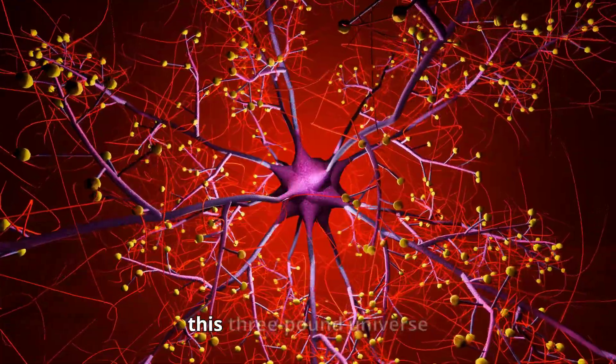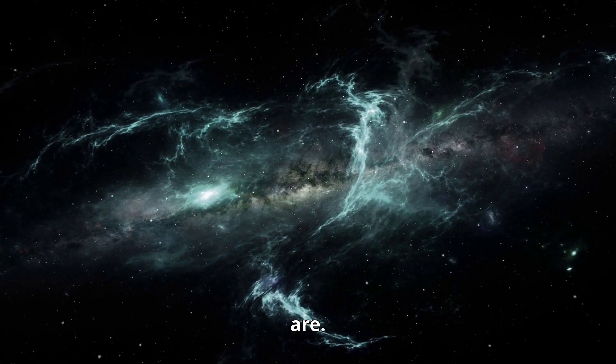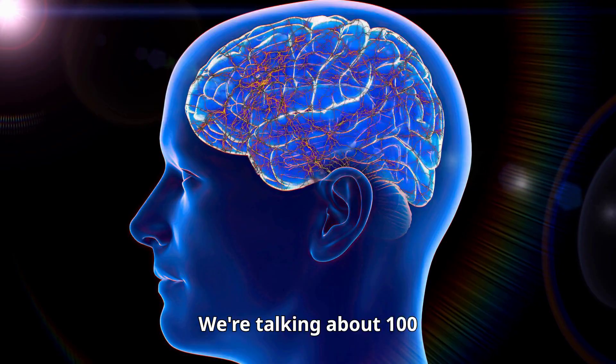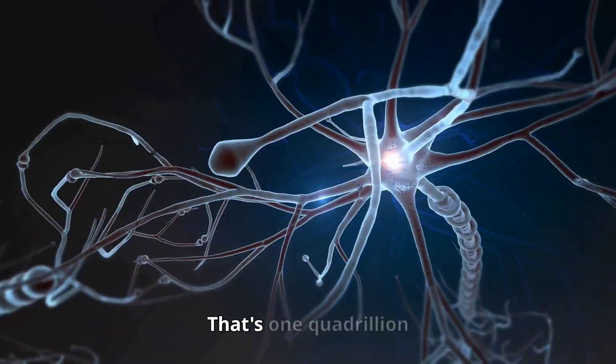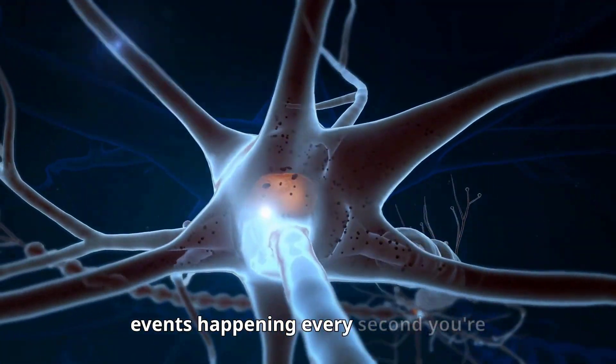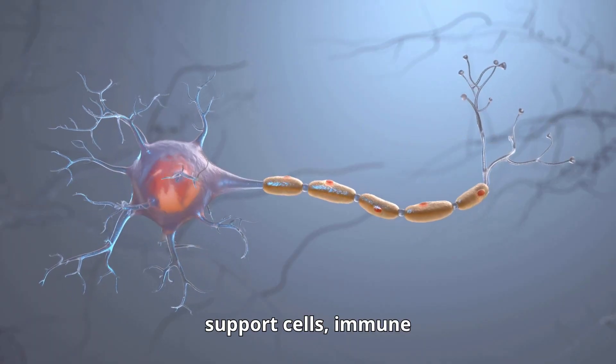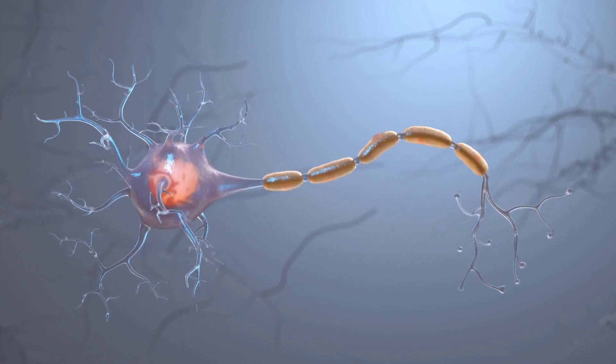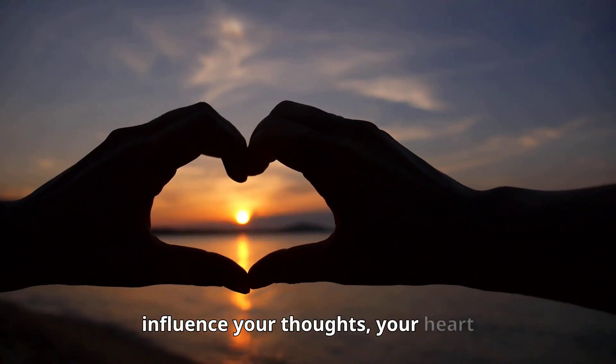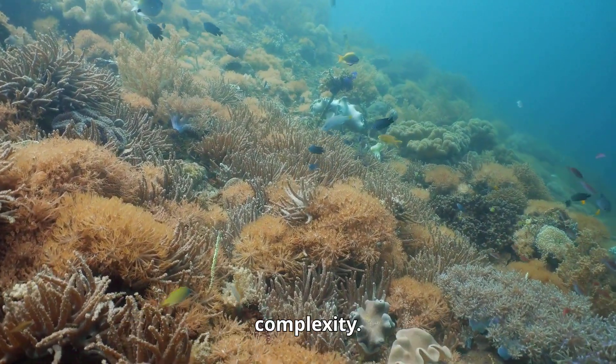Let's dive into the brain—this three-pound universe inside your skull that somehow creates everything you are. We're talking about 100 billion neurons connected by over a quadrillion synapses, firing signals up to a thousand times per second. That's one quadrillion events happening every second you're awake. It's not just neurons either. Billions of support cells, immune cells, and hormones like serotonin all play crucial roles. Your gut bacteria can influence your thoughts, your heart affects your emotions. We're dealing with a biological ecosystem of unimaginable complexity.